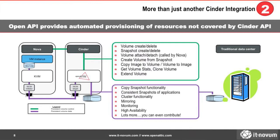Looking at the Cinder API, you see it covers functions like volume create, delete, and snapshot create — fairly simple functions. But if you compare that with a traditional high-end storage system, you're missing a lot: consistent snapshots application-aware for databases, cluster functionality, mirroring, high availability, and more. These are not reflected in the current OpenStack API, and that's a huge gap to bridge if you want to use commodity hardware as a reliable enterprise-grade OpenStack solution.